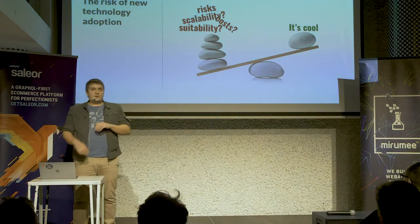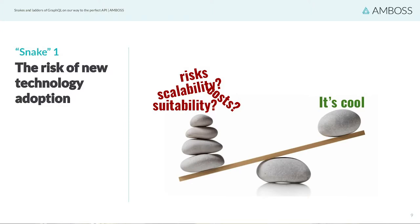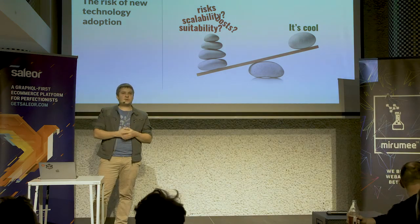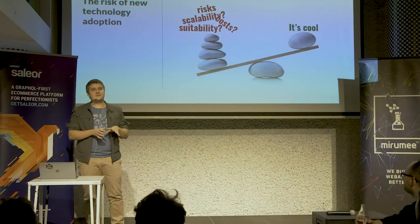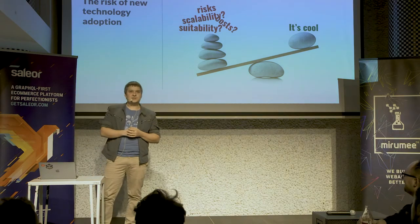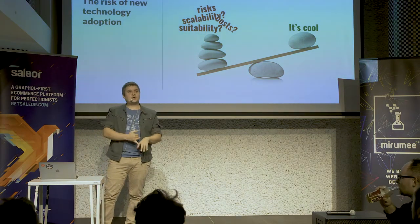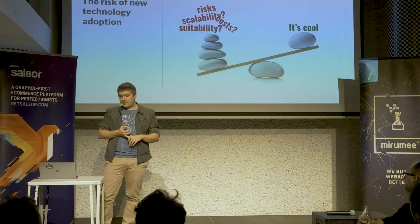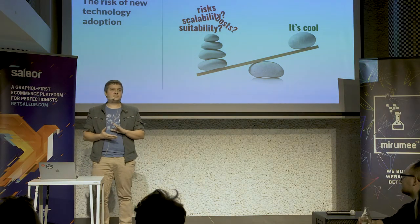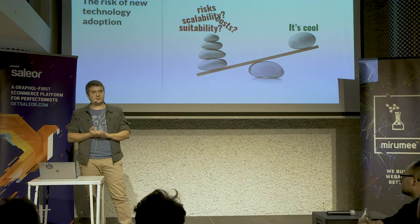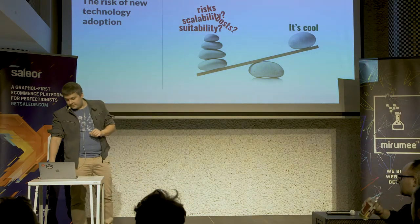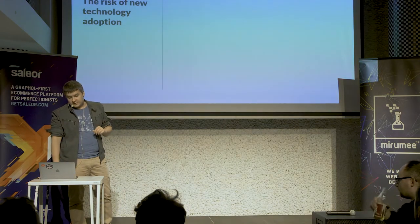A lot of stories I hear about how GraphQL was introduced in different companies involve some enthusiastic developer saying, 'GraphQL is really nice, it's really hyped — GitHub is doing it, Facebook is doing it, Facebook actually introduced it.' But from the business perspective, how do you evaluate the risks of introducing this technology? There are some implicit ones which are not visible to developers.